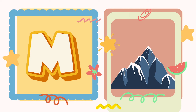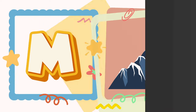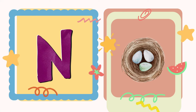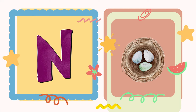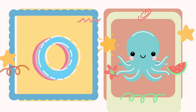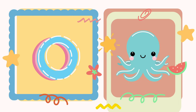M. M is for mountain. N. N is for nest. O. O is for octopus.